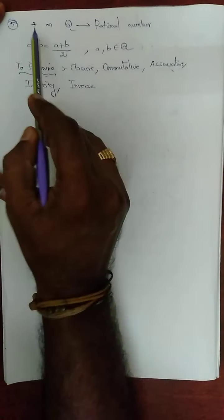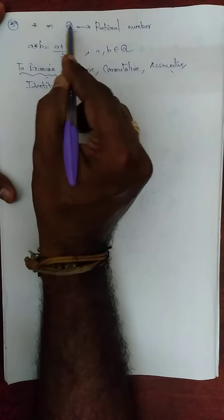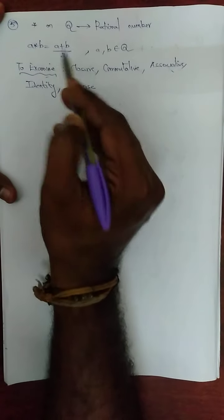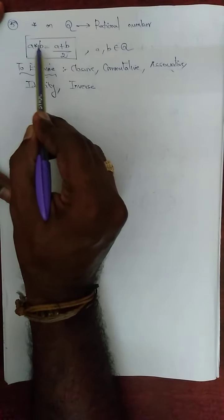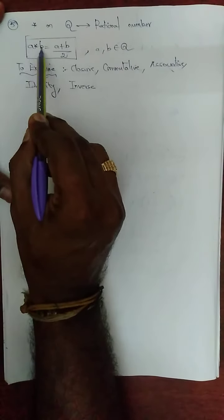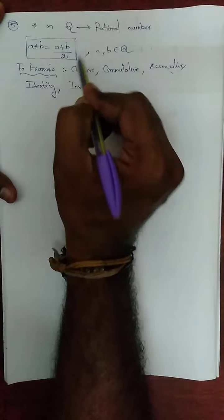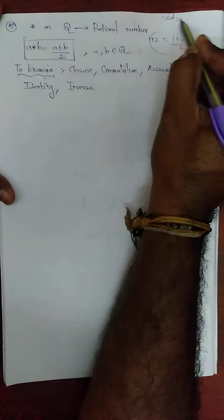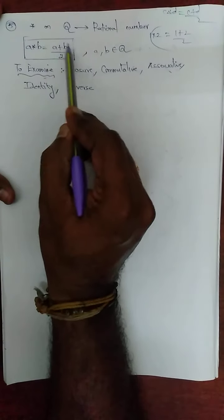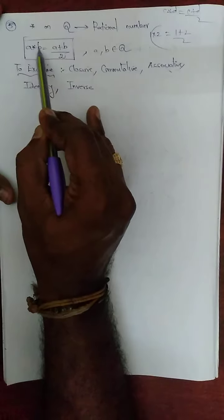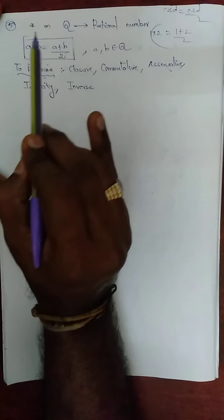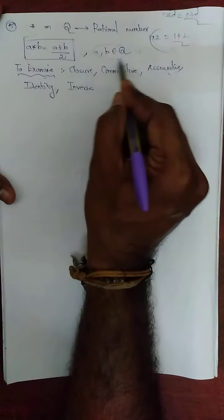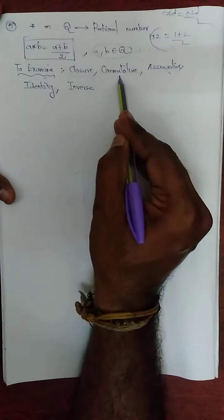This is a very important sum: a star b is a binary operation on Q, where Q is the set of rational numbers. The formula is a★b = (a+b)/2. This is a very important format — if we perform a binary operation on any two elements, we add them and divide by two. For example, 1★2 = (1+2)/2. This a and b belong to Q. We need to examine closure, commutative, associative, identity, and inverse properties.